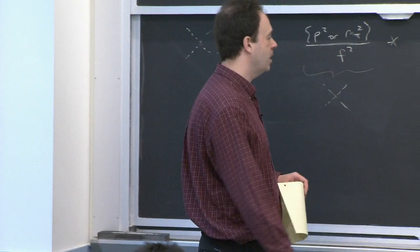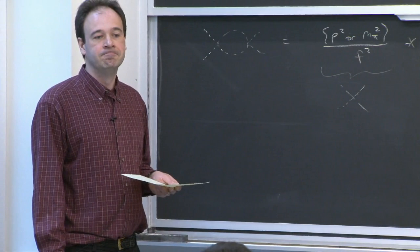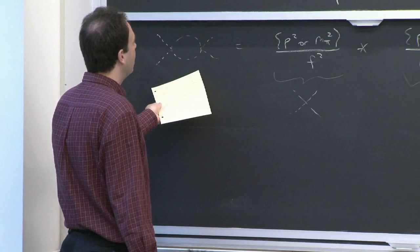Loops are suppressed by p squared over some scale Λ_χ squared, which is the scale of our expansion, and we associate that scale to 4π times f. We're going to continue with that story. We want to use dimensional regularization, and if we use dimensional regularization, we can think about having an MS-bar scheme.